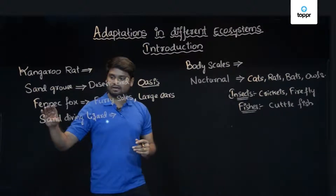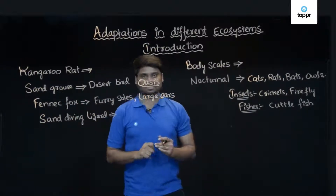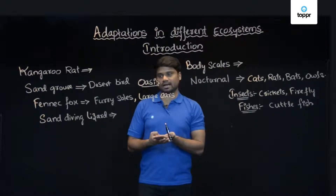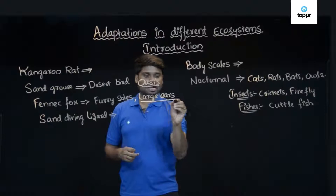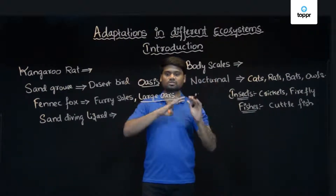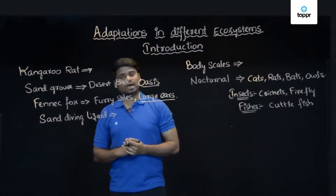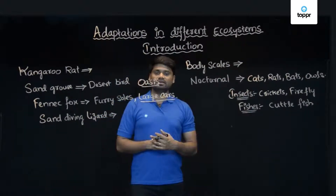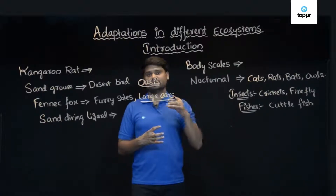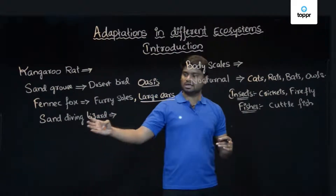The fennec fox has furry soles that protect it from the hot sand, and unusually large ears through which it loses body heat due to the large surface area. The sand diving lizard dives inside the sand during extreme heat, and keeps its feet in the air to cool down. These are the adaptations shown by the sand diving lizard.